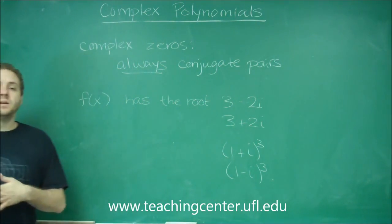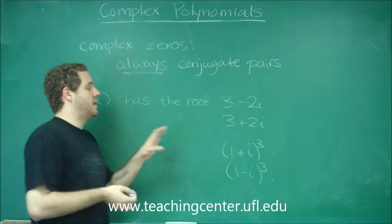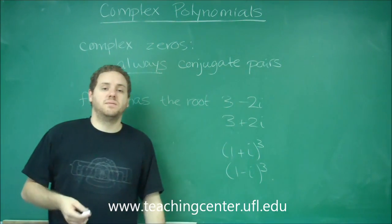So complex zeros always come in conjugate pairs, so you can always count how many you have, but if they give you one, you know you have to have the conjugate of the other.